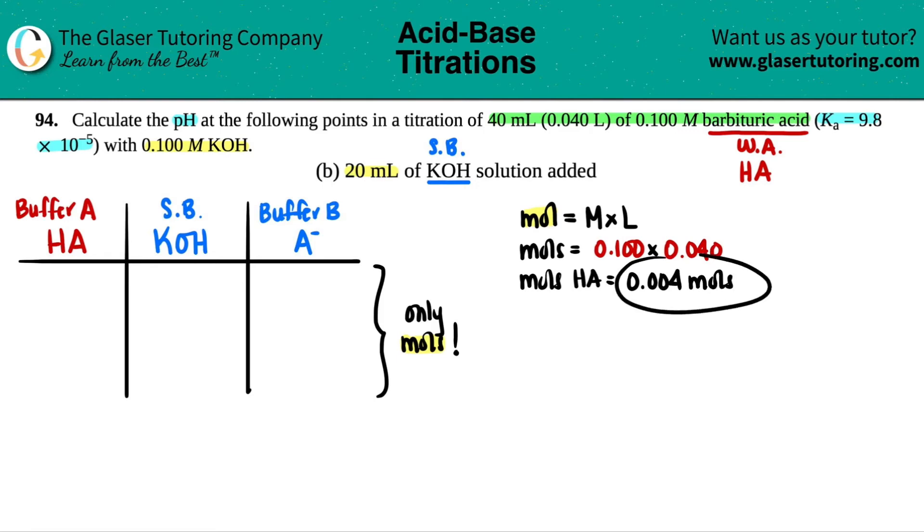So the moles of the barbituric acid, aka HA, is 0.1 times 0.04, so 0.004 moles. And this number goes to the top of the acid component. So I have one number. I'm going to put it in red because we're going to use the colors to our advantage in a little bit. So 0.004, I don't have to write the unit moles because I know that it's already in the correct units.